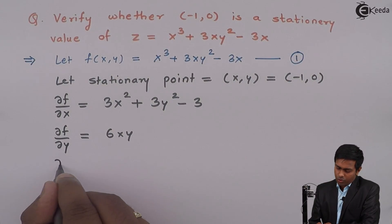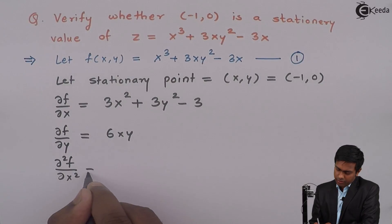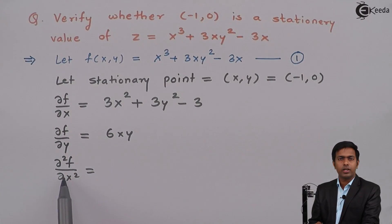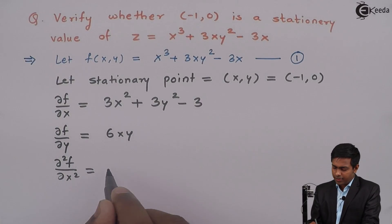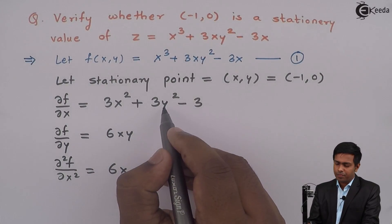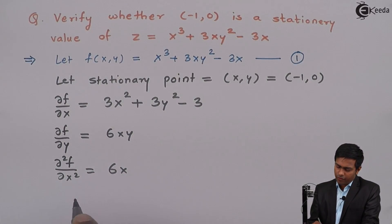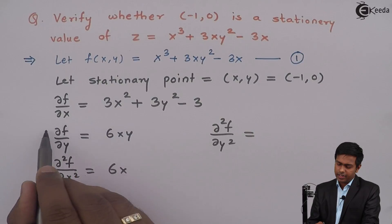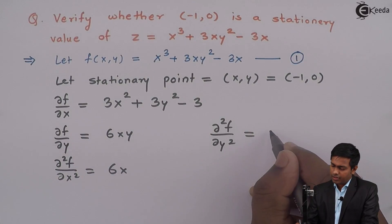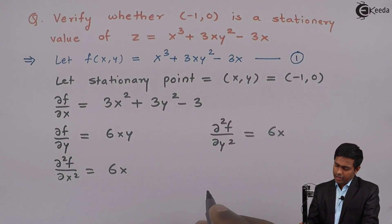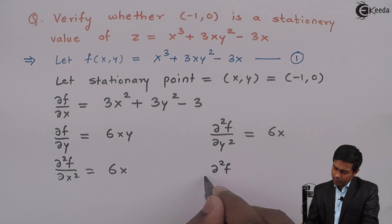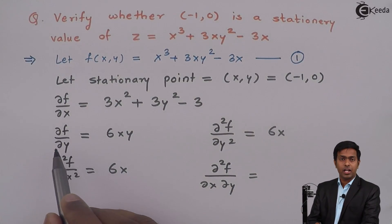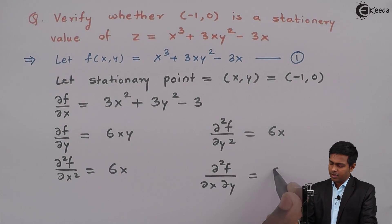Next we find ∂²f/∂x², which is the partial differentiation of ∂f/∂x with respect to x. So here we get 6x, then 0, and 0. Next we find ∂²f/∂y² by differentiating with respect to y again, giving only 6x. Finally, ∂²f/∂x∂y is obtained by differentiating ∂f/∂y partially with respect to x, giving 6y.